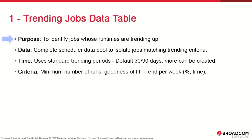The trending jobs data table uses source scheduler data to identify trends in job executions and target jobs with increasing runtime specifically. We covered this template in the thick client reporting tools. This is the web UI counterpart in table format, and we use this table to isolate the jobs that cause or exacerbate batch window creep.